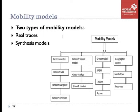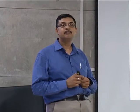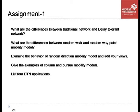Classification of mobility models: they are broadly classified into two categories — real traces and synthetic models. Real traces involve actually collecting data, like the National University of Singapore experiment over 200 days. The challenges of real traces include establishing the network, writing an application, distributing it to the targeted audience, ensuring they use it, and ensuring data gets logged.